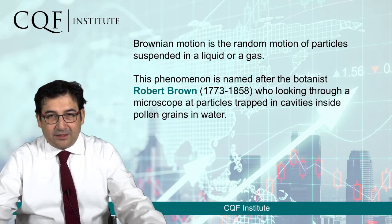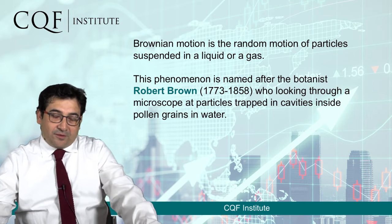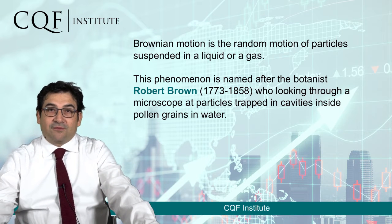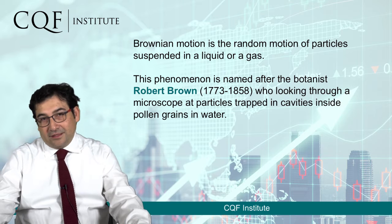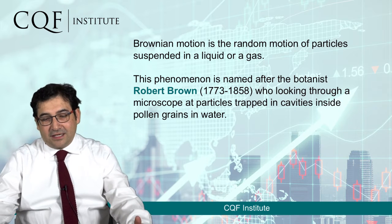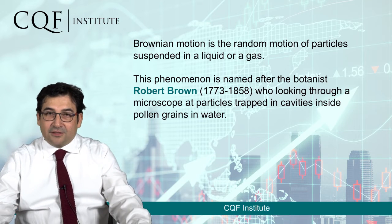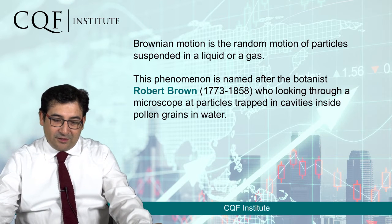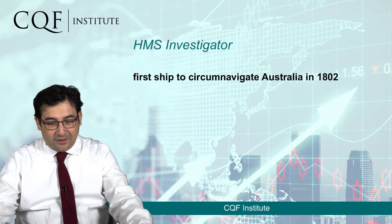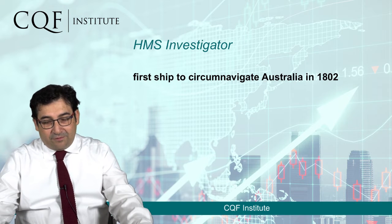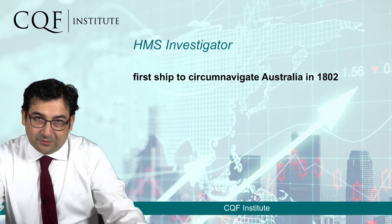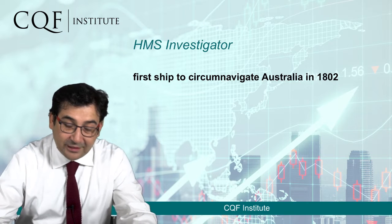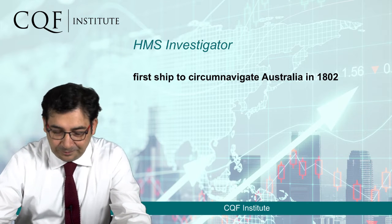The discovery by Robert Brown was crucial for quantitative finance, and it was a discovery made not inside a laboratory or a teaching room — it was done while traveling the world. Robert Brown was traveling in his youth on the HMS Investigator, which was the first ship to circumnavigate Australia in 1802.